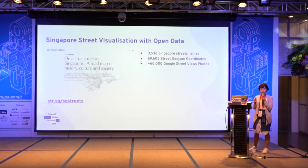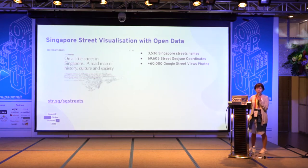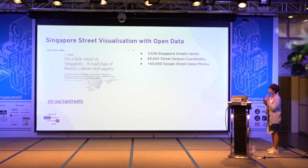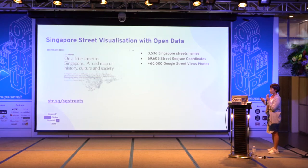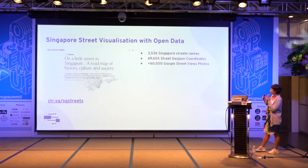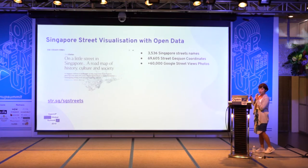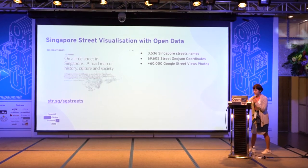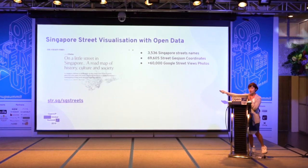The first one is a Singapore street visualization with open data. It was a kind of massive project. I accumulated a whole chunk of the dataset — the Singapore street names — and using Python I parsed GeoJSON data from openstreets.com. I also used Google Street View photos and linked them with the trace and the GeoJSON coordinates. If you go to the link, you can check it out.